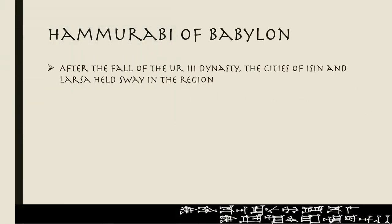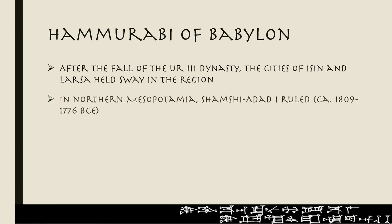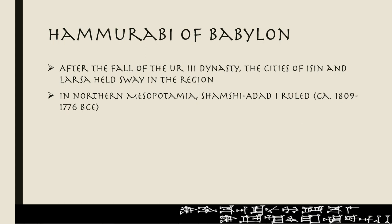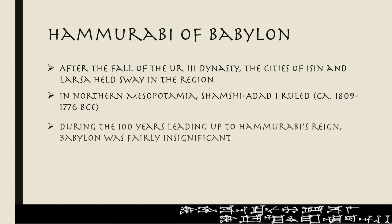After the fall of the Ur III dynasty at the end of the third millennium with Shulgi and his dynasty, the cities of Isin and Larsa held sway respectively in the region. In northern Mesopotamia, Shamshi Adad I ruled there beginning at the end of the 19th century and held sway over a very large region.